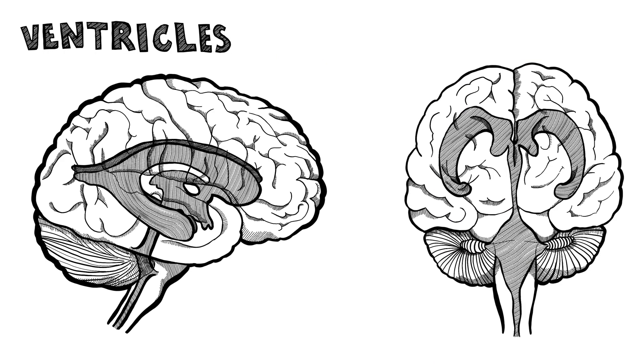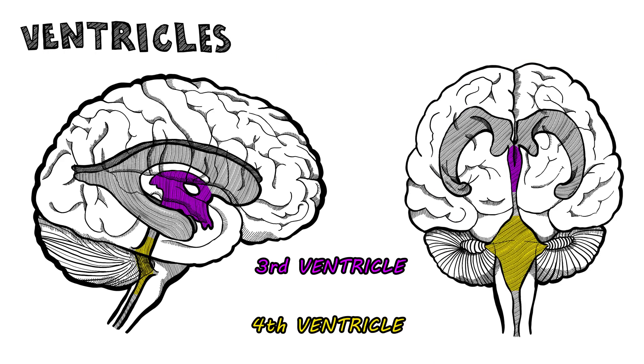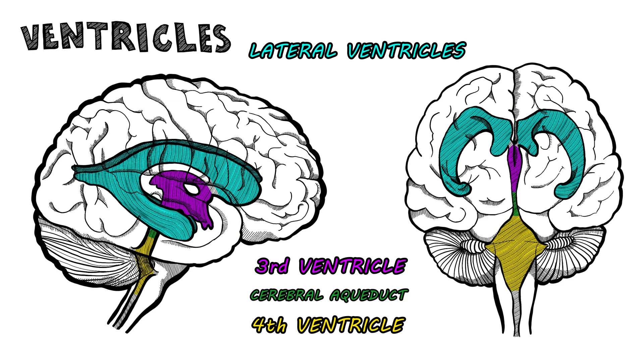Four ventricles contain CSF: the fourth, the third, and two lateral ones. In between, through the cerebral aqueduct and intraventricular foramen, the CSF runs.